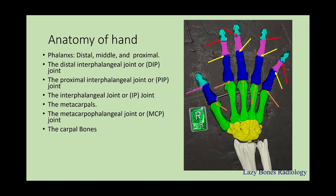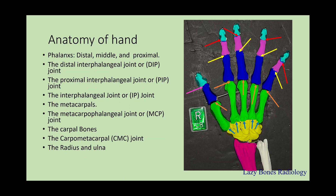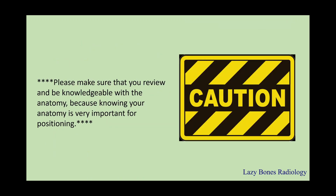Next, you have the carpal bones, and in between them there are the carpometacarpal joints, known as the CMC joints. And lastly, the radius, which is on the lateral side, and the ulna, which is on the medial side — do not get those confused. Please make sure to review and be knowledgeable with the anatomy, because knowing your anatomy is very important for the positioning part.